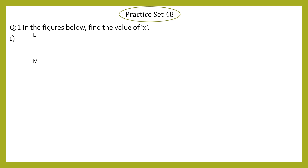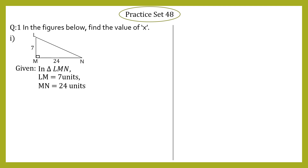Sub-question 1: We have segment LM and segment MN. The angle formed between these two segments is 90 degrees since they are perpendicular to each other. Segment LN is opposite to angle M, which is 90 degrees — the side opposite to the 90-degree angle is called the hypotenuse. Given: length of LM = 7 units, length of MN = 24 units. We need to find the value of x.